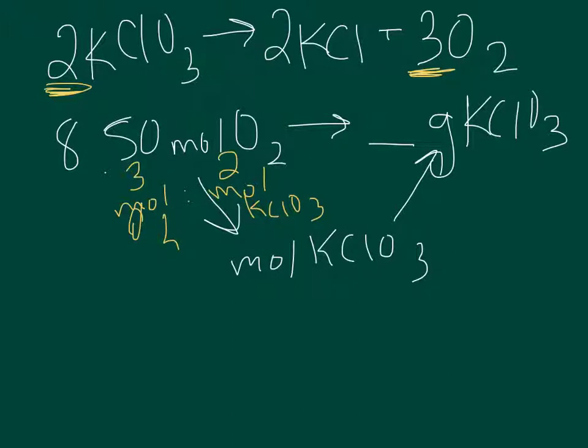To get from moles of potassium chlorate to grams, I need to use the molar mass. I get the molar mass from the periodic table and find that it's 122.55 grams, which equals one mole of potassium chlorate.